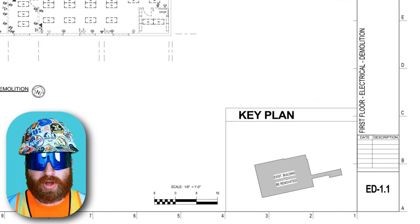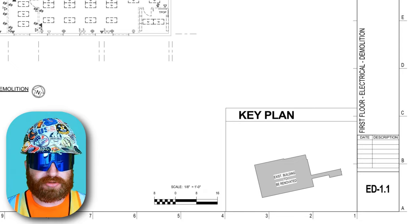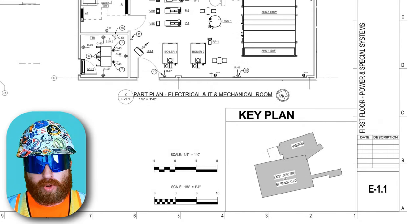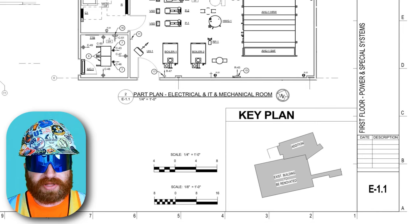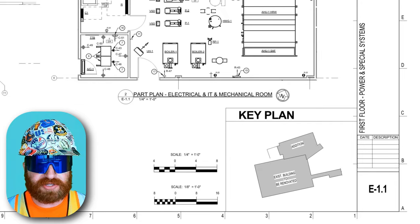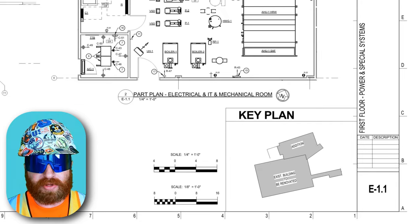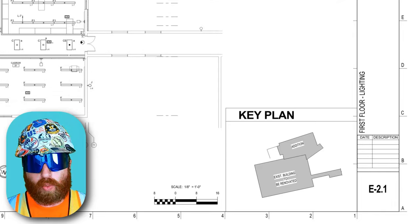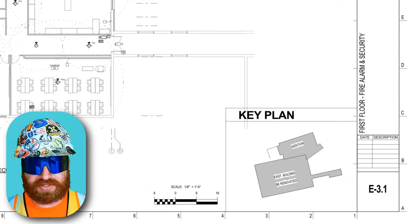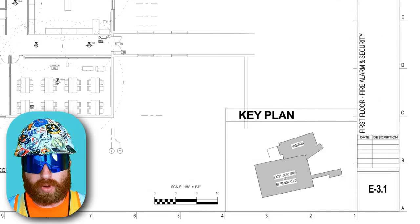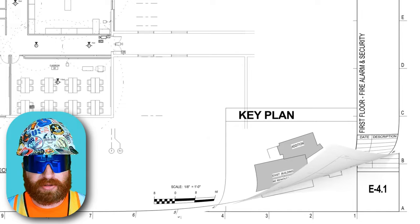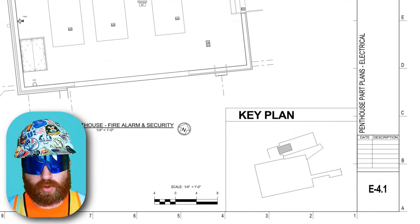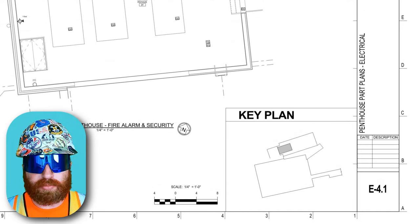ED1.1 is our first floor electrical demolition sheet. E1.1 is our first floor power and special systems, which shows the majority of our receptacles, low voltage data outlets, mechanical or plumbing equipment that needs power, and more. Then we have E2.01, which is our first floor lighting throughout the space. Similarly, E3.1 is first floor fire alarm and security. Next is E4.1, penthouse part plans electrical.